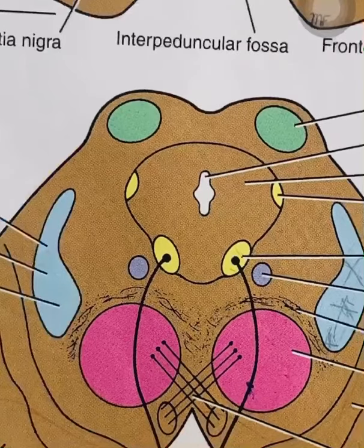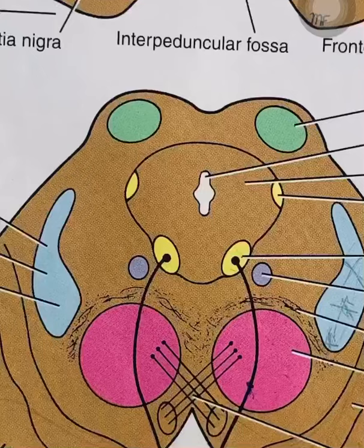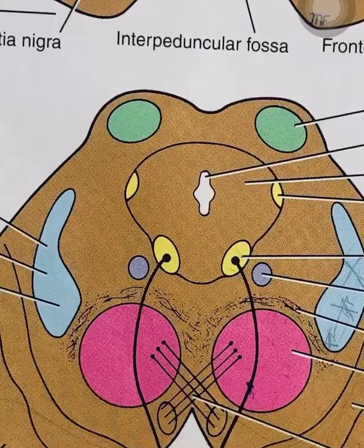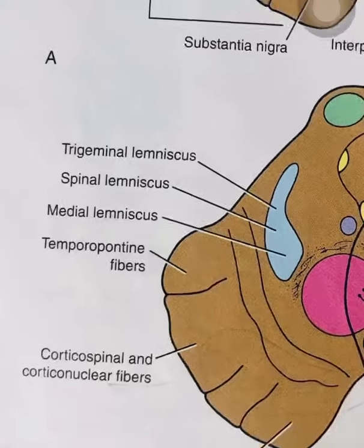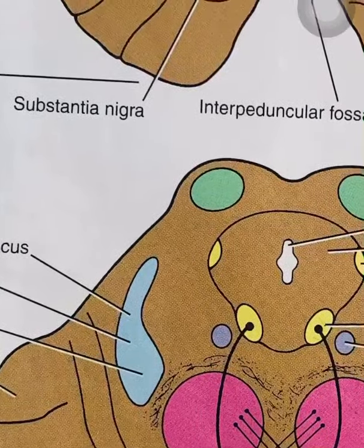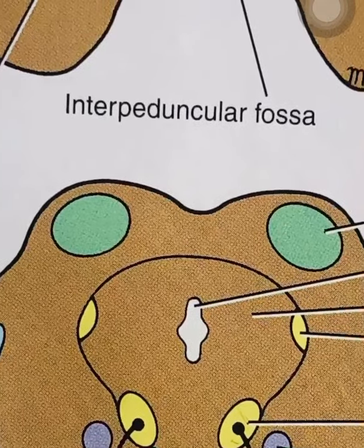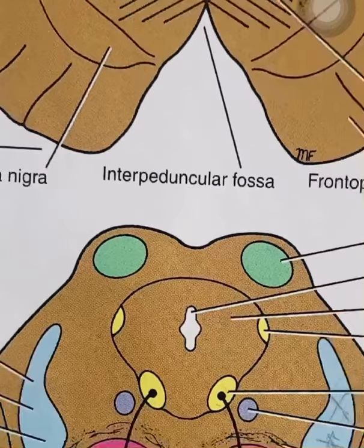From the red nucleus, fibers cross over — this is called decussation — forming the rubrospinal tract. This decussation is called the ventral tegmental decussation. Just above that is another decussation called the dorsal tegmental decussation. You should also know that the midbrain, like the pons, has two parts: the tegmental part and the tectum (the upper part).